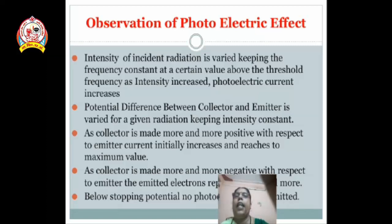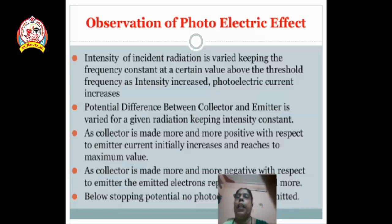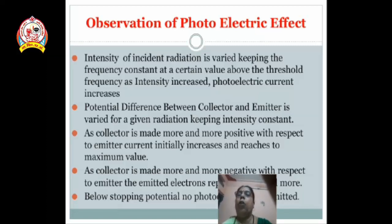The second observation: the potential difference between collector and emitter is varied for a given radiation while keeping intensity constant. When we make the collector more and more positive, the emitted electrons are attracted towards the collector and current goes on increasing, reaching its maximum value. When we make the collector more and more negative, the emitted electrons are repelled and current goes on decreasing until it becomes zero. Stopping potential is that potential at which photoelectric current is equal to zero.